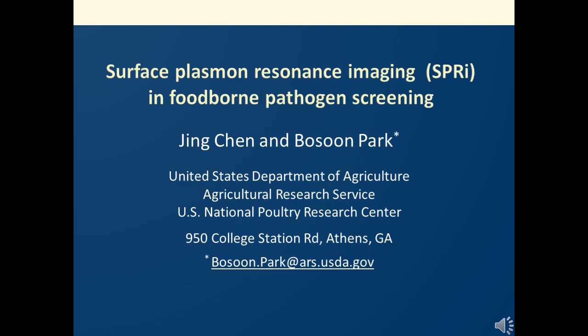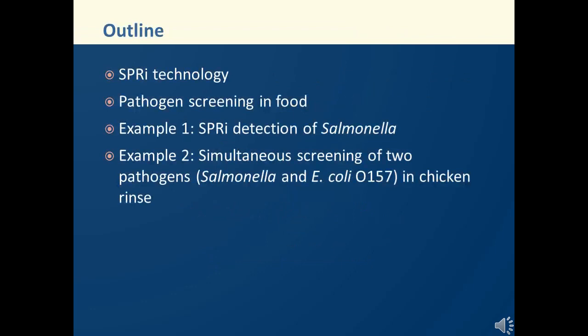Thank you for the wonderful introduction. I'm very pleased to share with you today a little bit on the SPRI pathogen screening platforms we have been developing in our research group. I'll start off with a brief introduction to the SPRI technology and relate how SPRI can be a useful tool for pathogen screening in the food safety sector. Then I'll provide examples of how we developed an SPRI method for detecting Salmonella, and another example of simultaneous screening of two pathogens from chicken rinse, which is a very common matrix in poultry product safety screening.